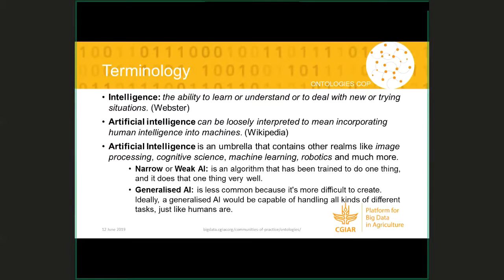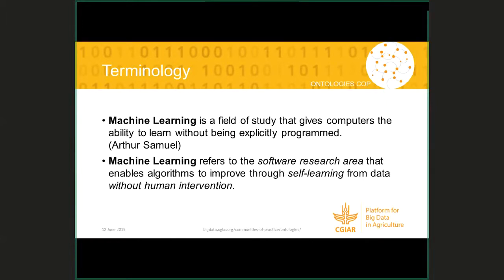Then we have generalized AI, which is the kind of stuff you see in movies — think about Terminator. It is supposed to be able to handle any type of problem and adapt to different situations just as humans do. So where does machine learning fit? Machine learning is a field of study that gives computers the ability to learn without being explicitly programmed. It is essentially the application of artificial intelligence to computers, which makes machine learning a branch of artificial intelligence.